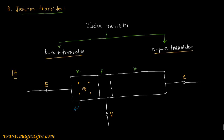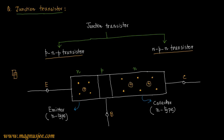We can denote the majority and minority charge carriers in the N-type emitter. The emitter consists of a greater number of conduction electrons and a lesser number of holes. On the right-hand side, the collector is also N-type. A dot means conduction electrons are the majority charge carriers, and a plus sign means holes are the minority charge carriers in the N-type collector.